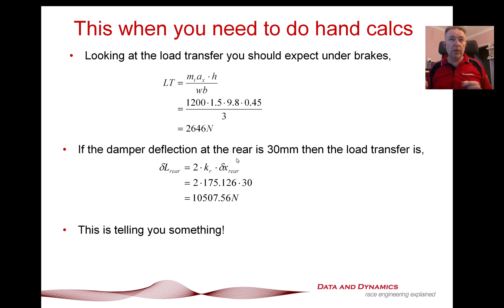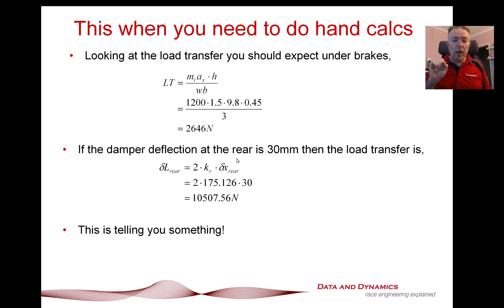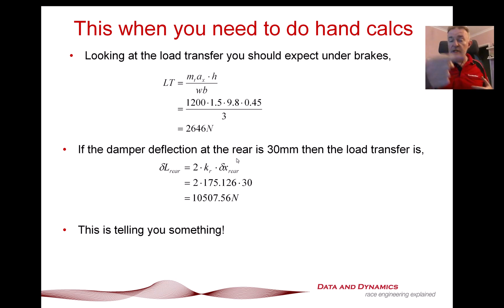Now, if the damper deflection at the rear is going to be about 30 mm, and the spring rate is about 1,000 lb/in with a motion ratio of 1, our load transfer from the data is going to be 10,507.56 newtons. Folks, this is how you look at data — this is the data trying to tell you something when you see a discrepancy between the load from the damper data versus what you're seeing from a simple hand calc.